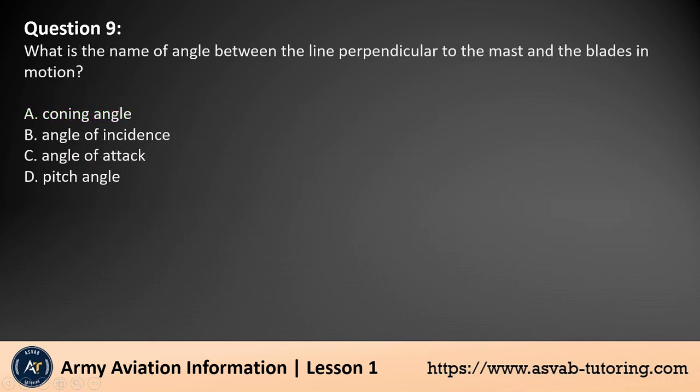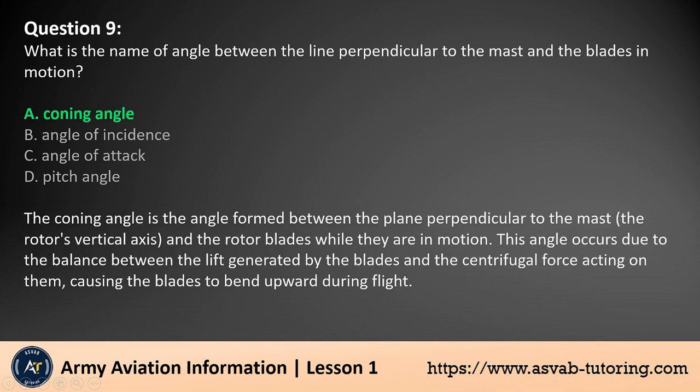Question 9. What is the name of angle between the line perpendicular to the mast and the blades in motion? A. Coning angle. B. Angle of incidence. C. Angle of attack. D. Pitch angle. The answer is A.